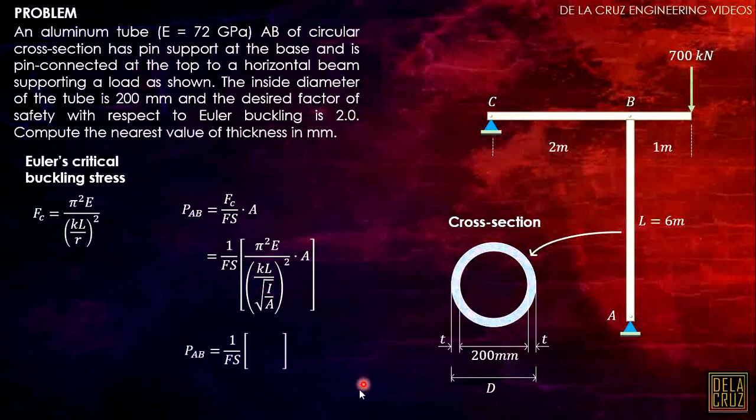And it will yield to this formula: pi squared EI over (kL) squared. So this is what we call Euler's critical buckling load. This one is Euler's critical buckling stress. So this is what we will use to get the thickness.